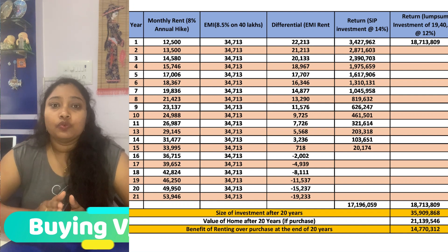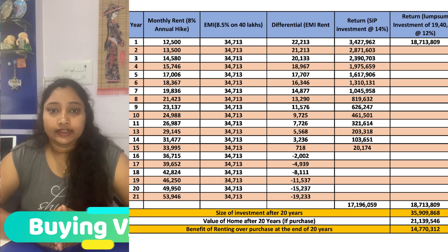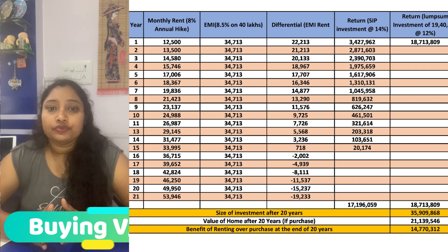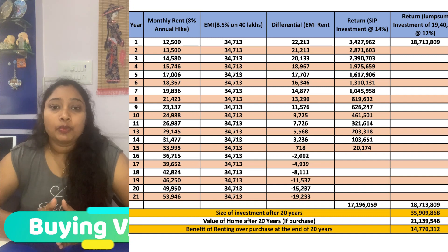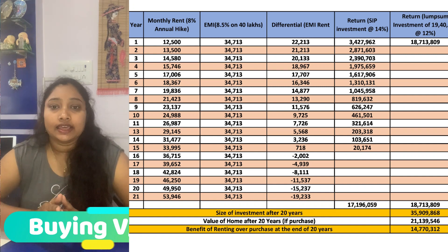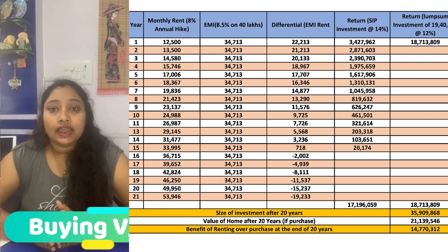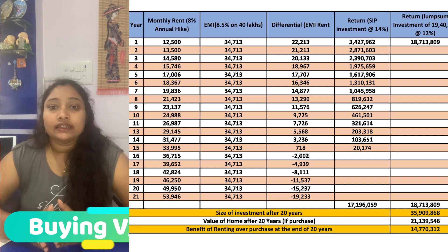At the end of 20 years, if one opts for renting, he or she would have accumulated rupees 3.59 crore, which is approximately rupees 1.5 crore higher than the value of the property at the end of 20 years. You can see that in the table.